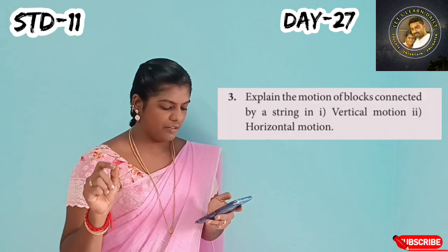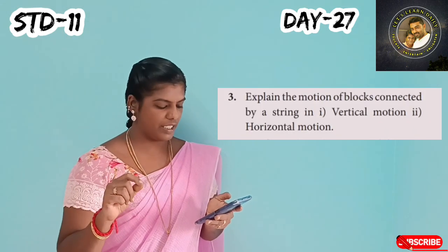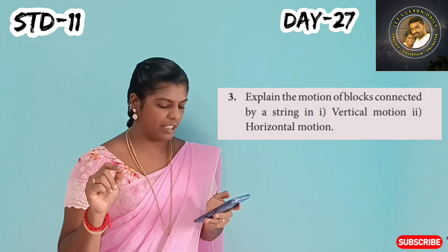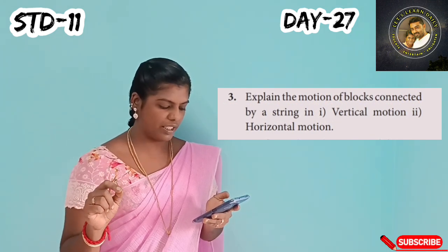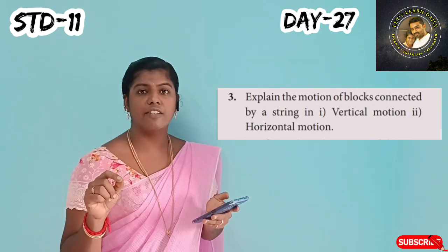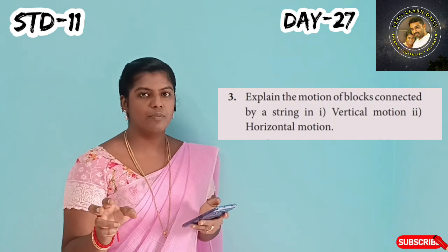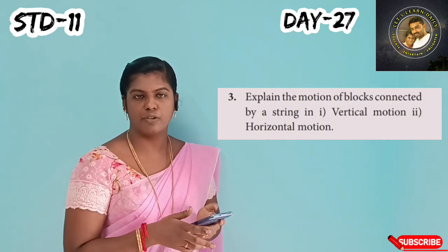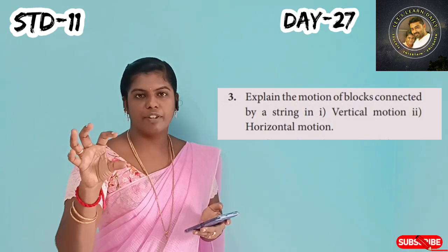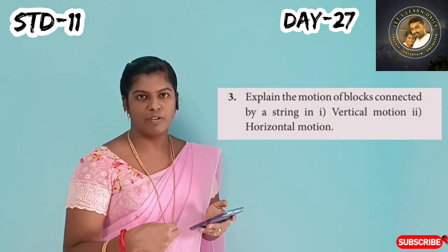Next, for 11th and 12th, we will talk about vertical motion — two blocks connected — and horizontal motion. We will explain the motion of blocks connected by a string in both vertical and horizontal motion. We will cover the main diagram, free body diagram, description, and the formula derivation.